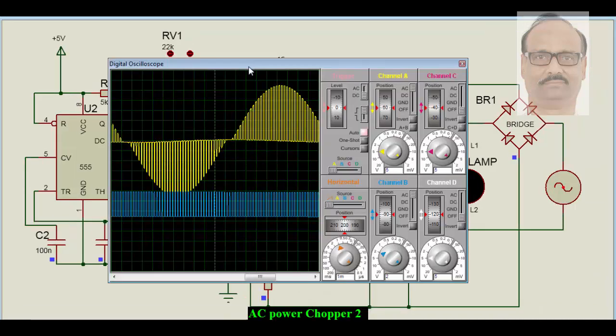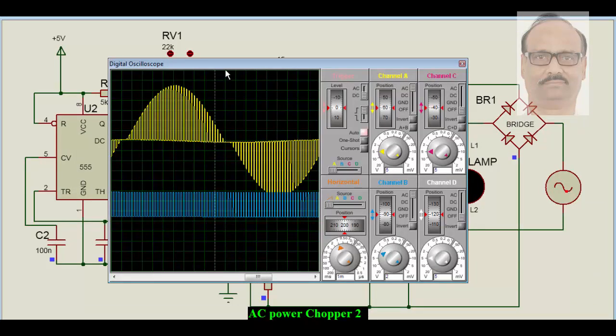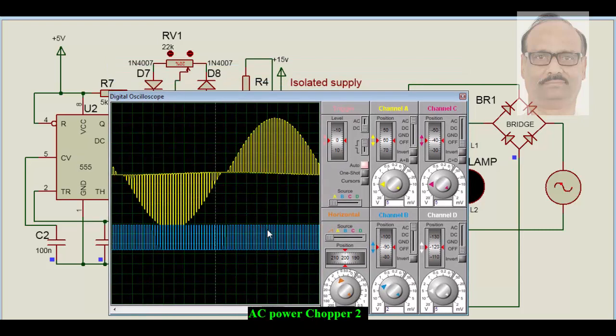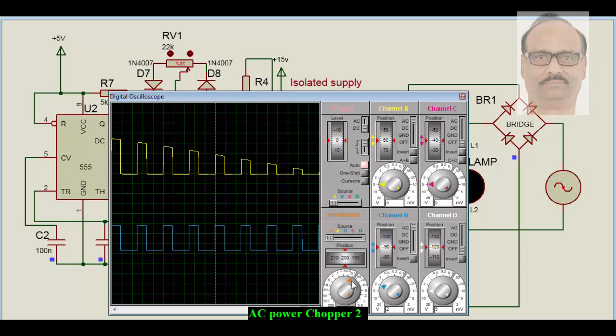So while we operate this, what we find is a voltage of this nature comes because of the pulse width modulation and this is the pulse width is coming from triple five. And if we expand it, we can see it better that this is what the pulse width during the on time.